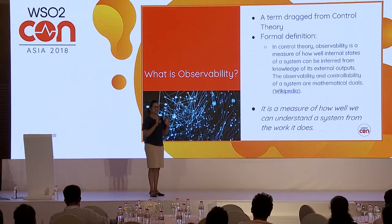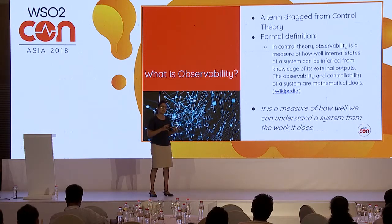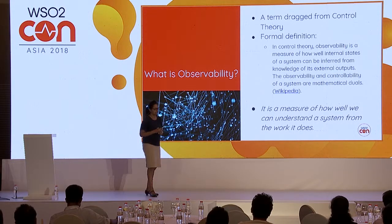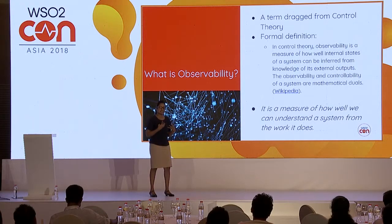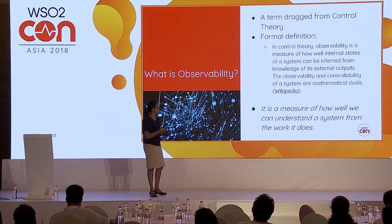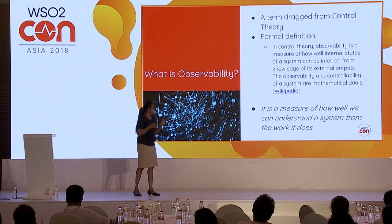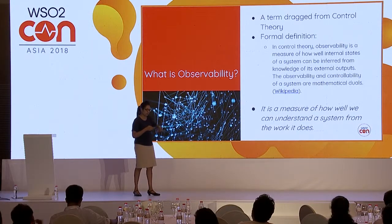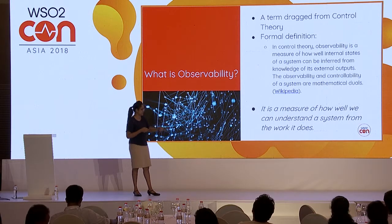Similarly, this sort of transparency — the observability of the software system — is very much required. Then only can we do performance engineering, troubleshooting, and get many more advantages. So I hope you now understand what observability is: basically transparency, how the system is working and how well it's operating.